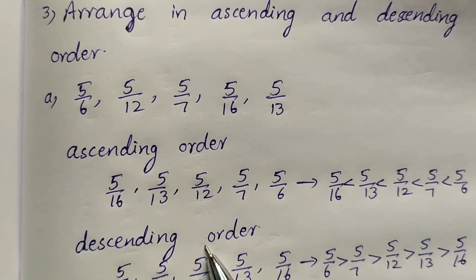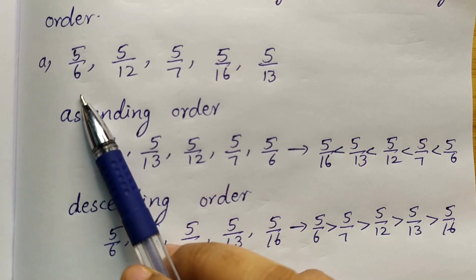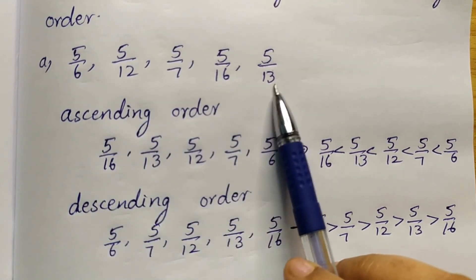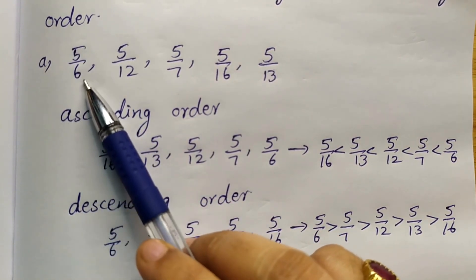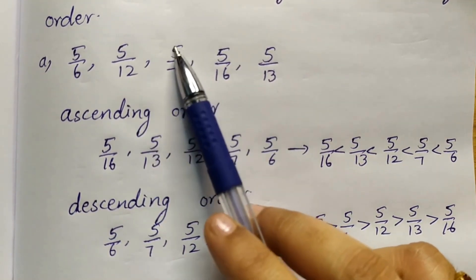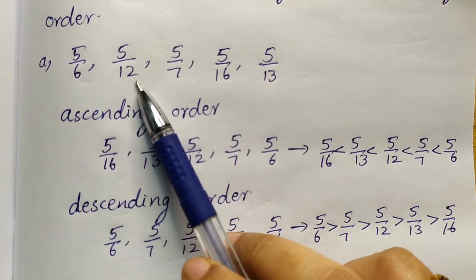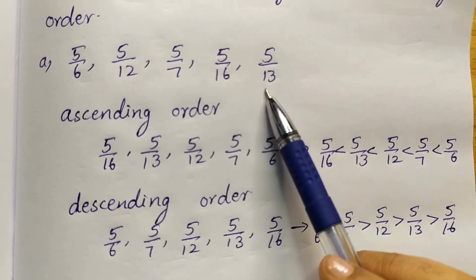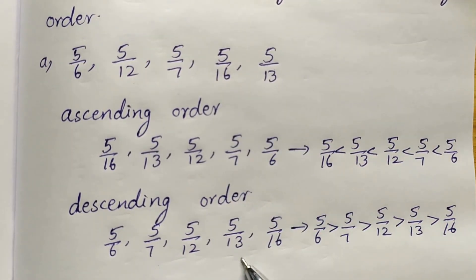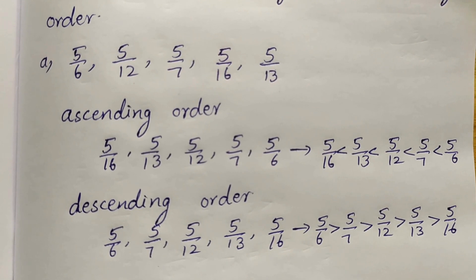Now we have to write in descending order — that means the greater number to the smaller number. The smaller the denominator, the bigger that fraction. Among 6, 12, 7, 16, 13 — 6 is the smallest, so 5 by 6 is the greatest fraction. Next 7, so 5 by 7. Then 12, so 5 by 12. Then 13, so 5 by 13. Then 5 by 16. Descending order: 5 by 6 > 5 by 7 > 5 by 12 > 5 by 13 > 5 by 16.